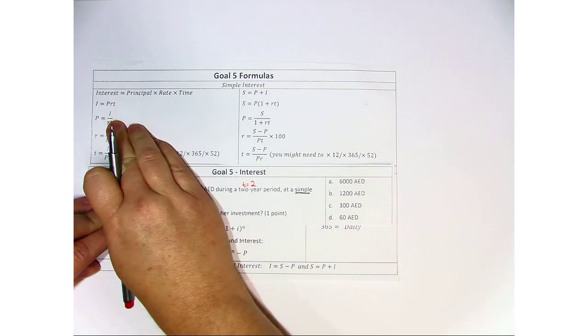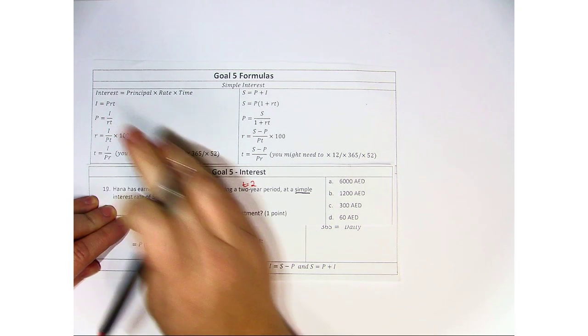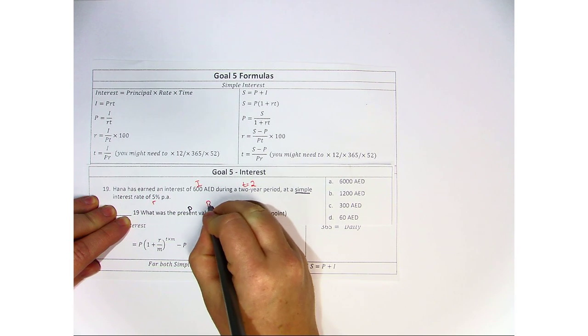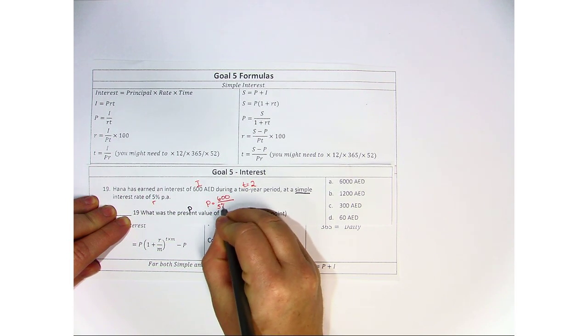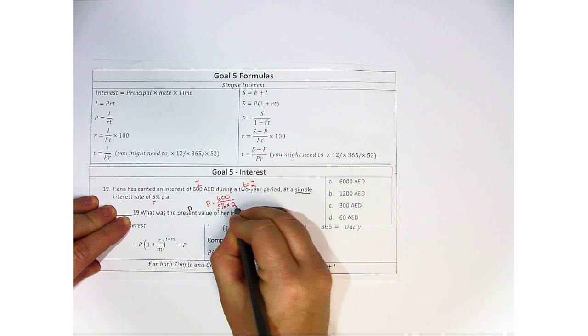So because of that, we're going to choose this formula in order to solve. P equals six hundred divided by five percent times two.